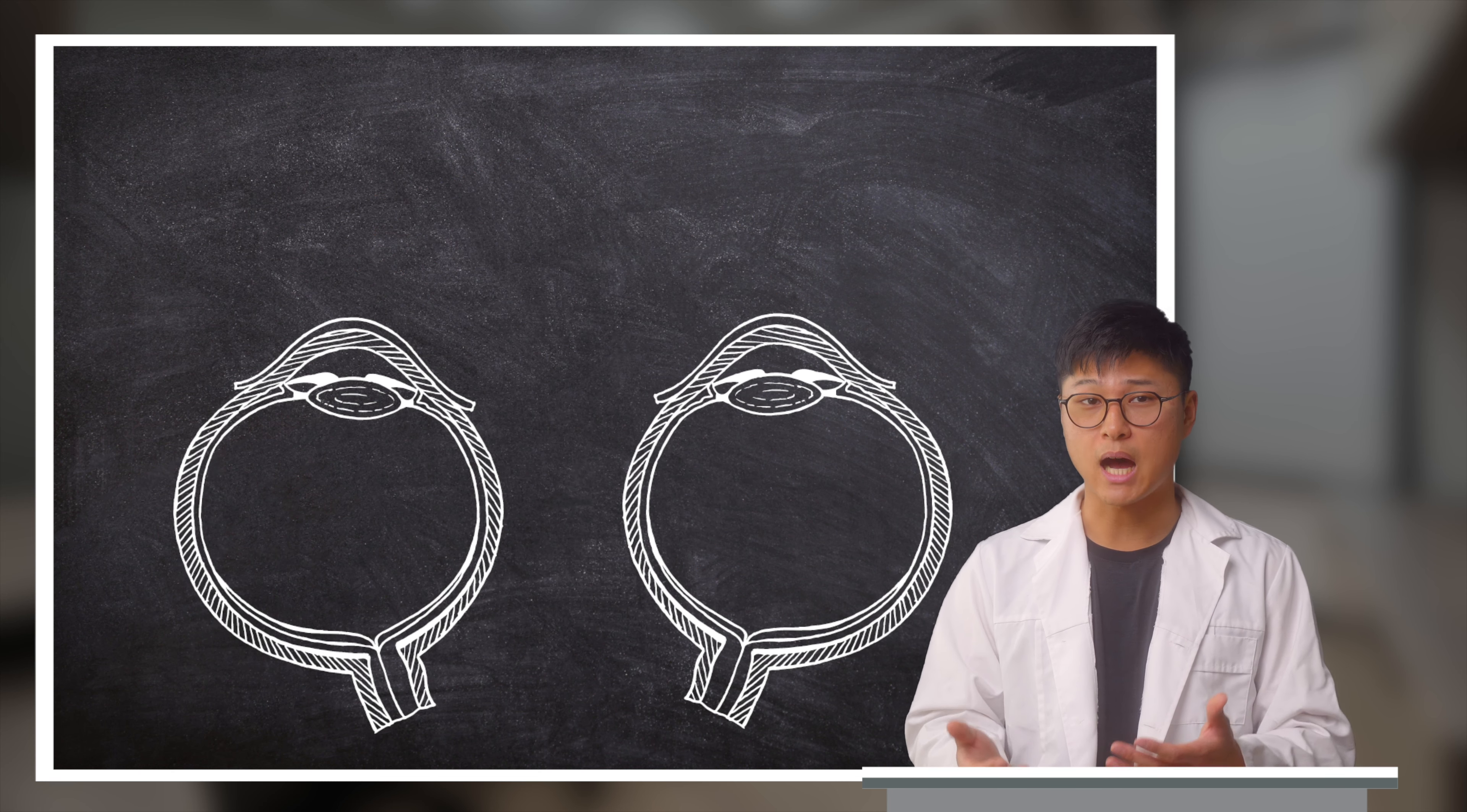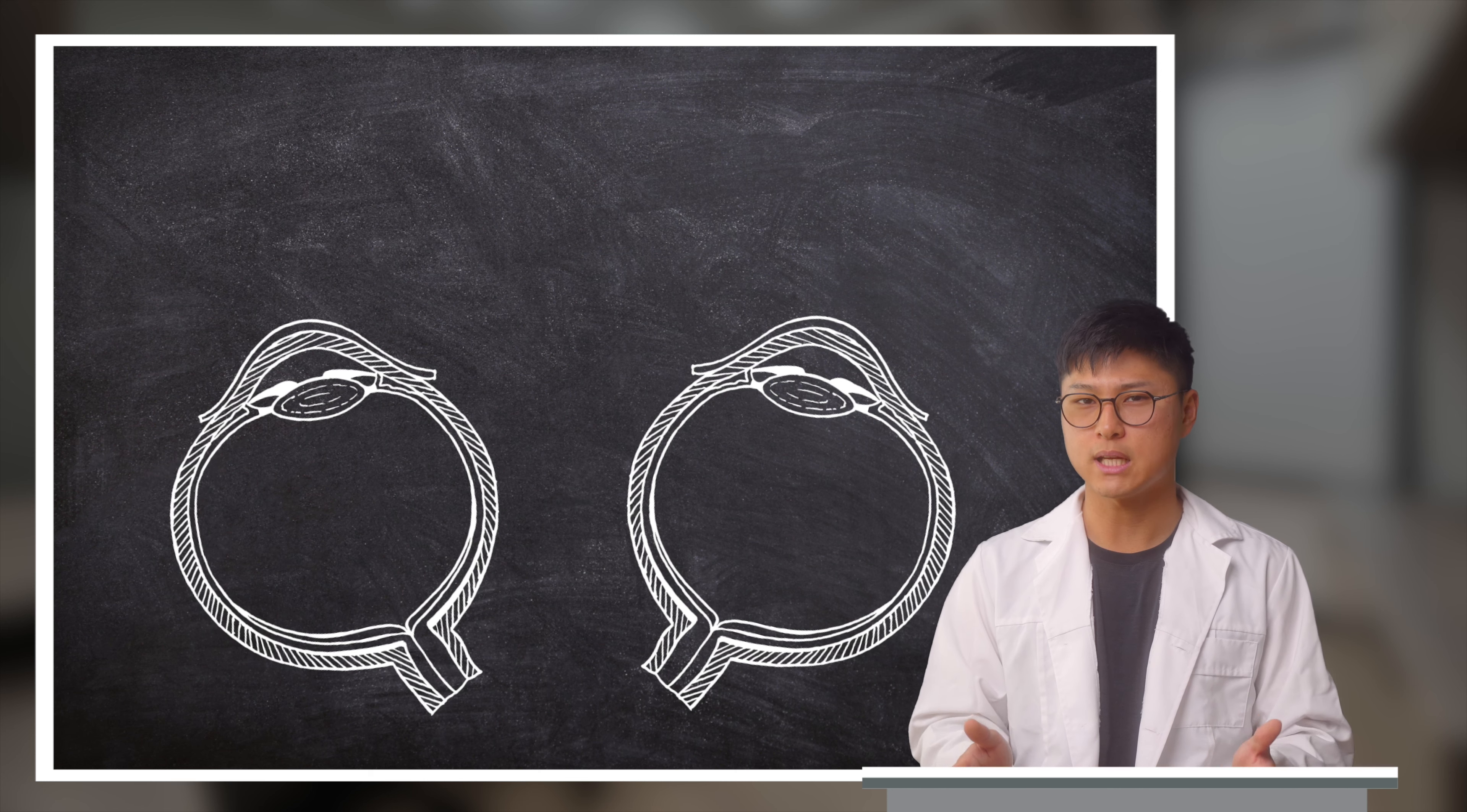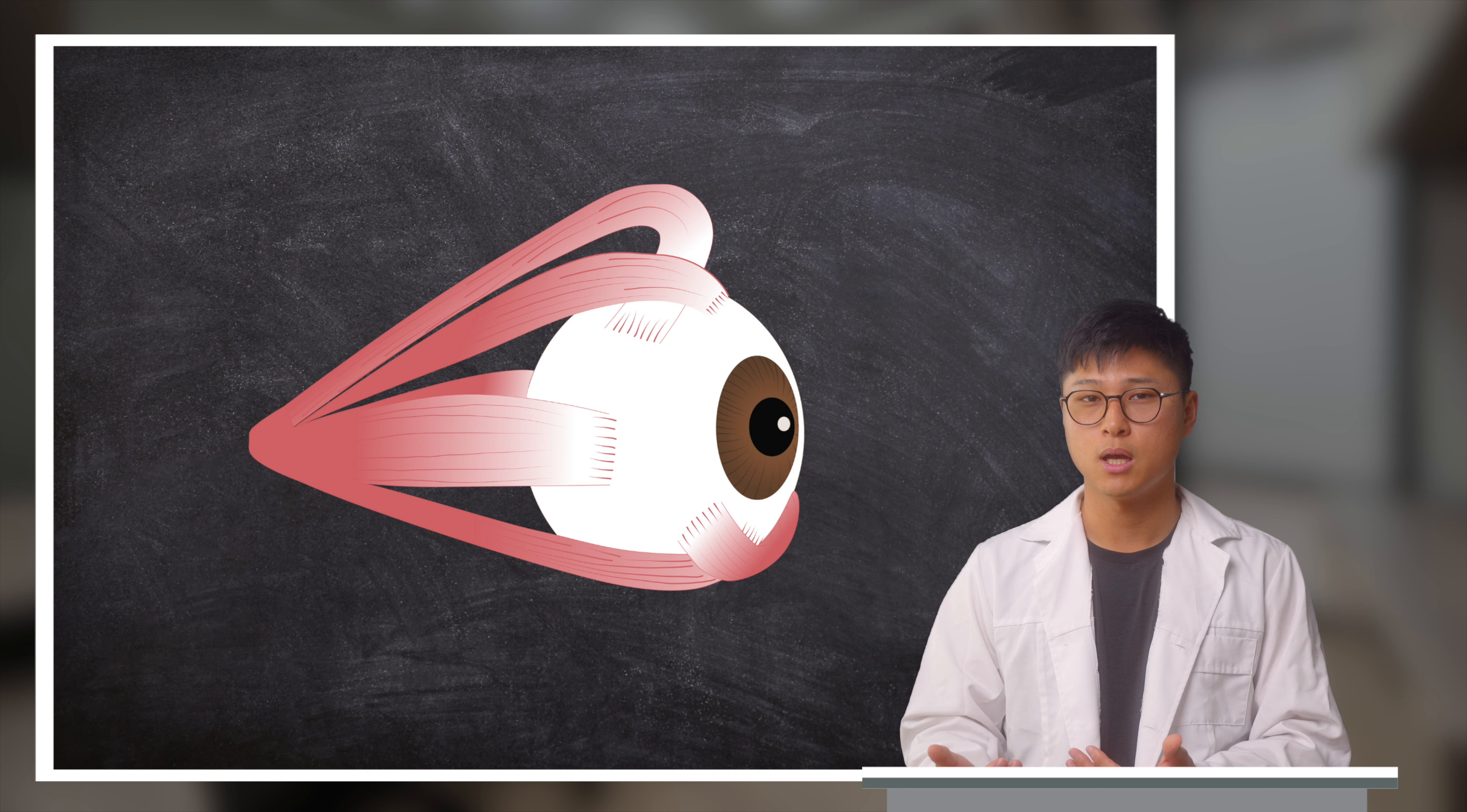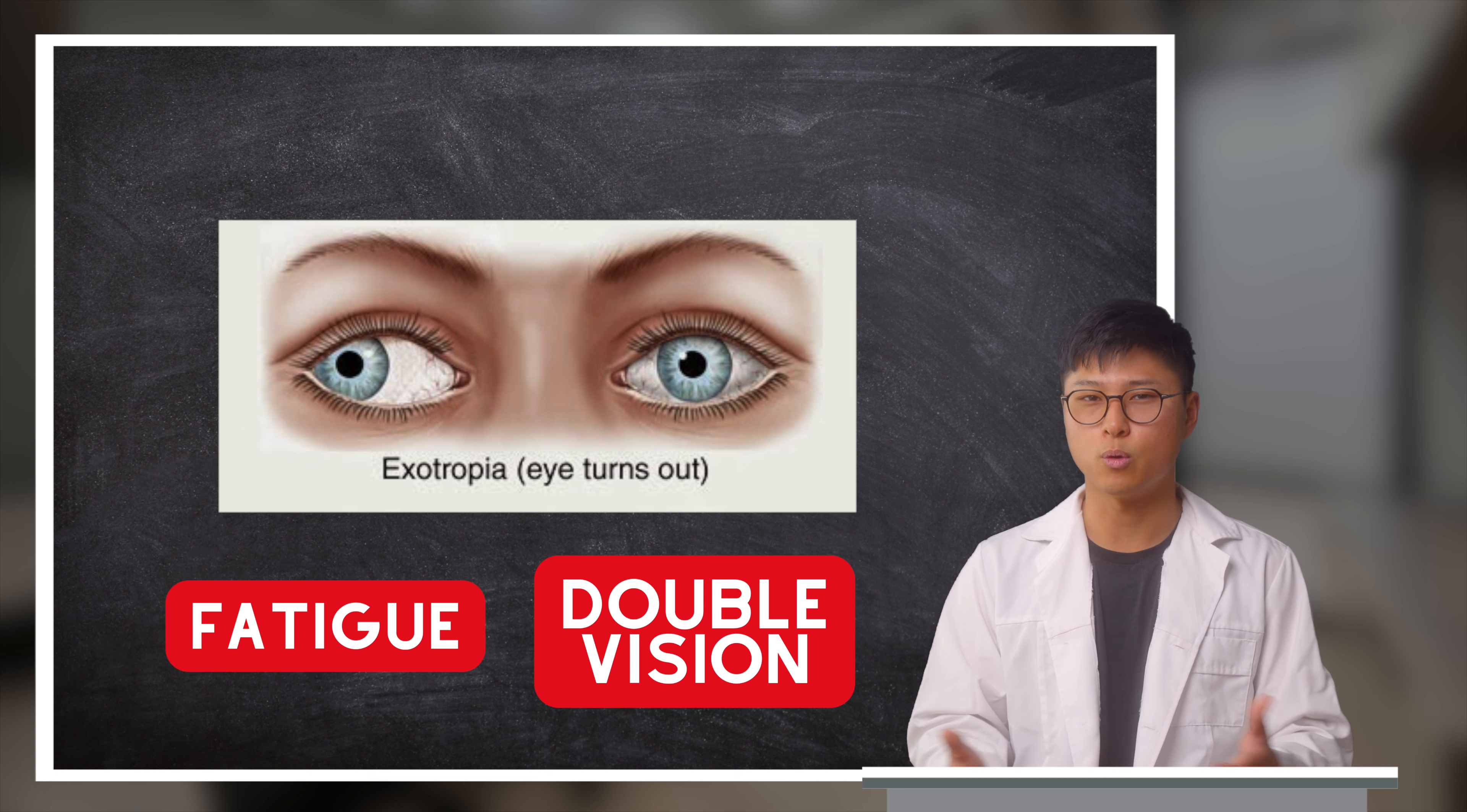When fully relaxed, eyes generally like to default to their phoria, which can present in a number of different ways. This deviation is normally nullified thanks to the stabilization features of our extraocular muscles. But if the deviation is too large, or the muscles become overworked, then it can lead to fatigue or double vision.